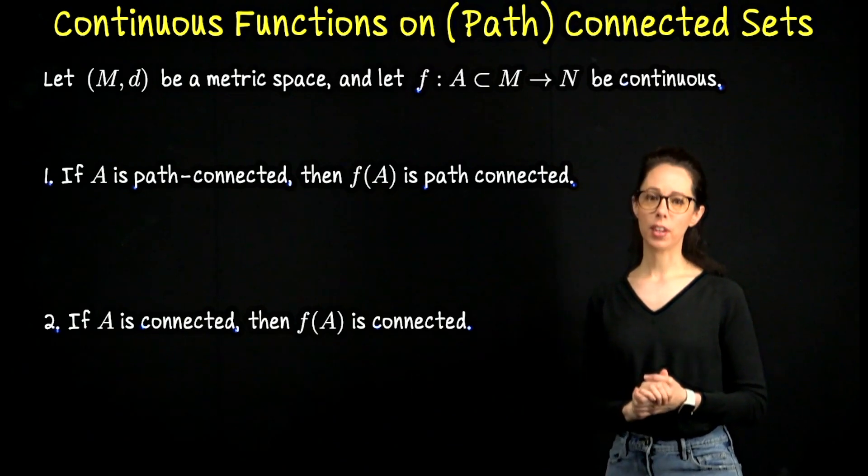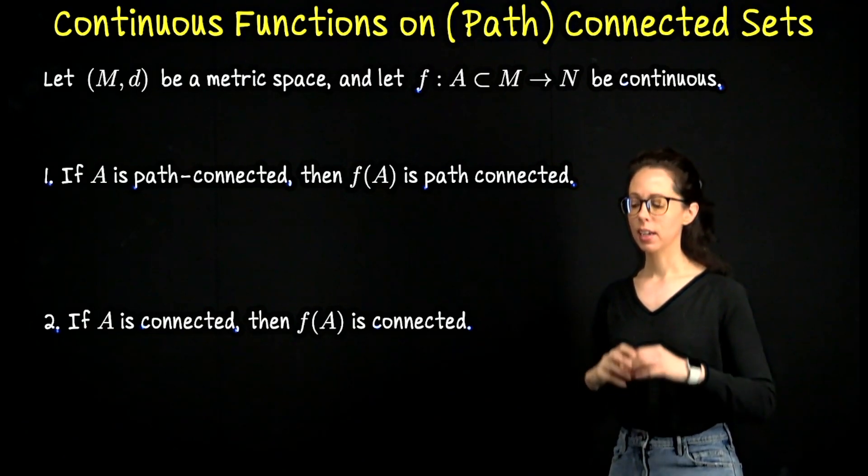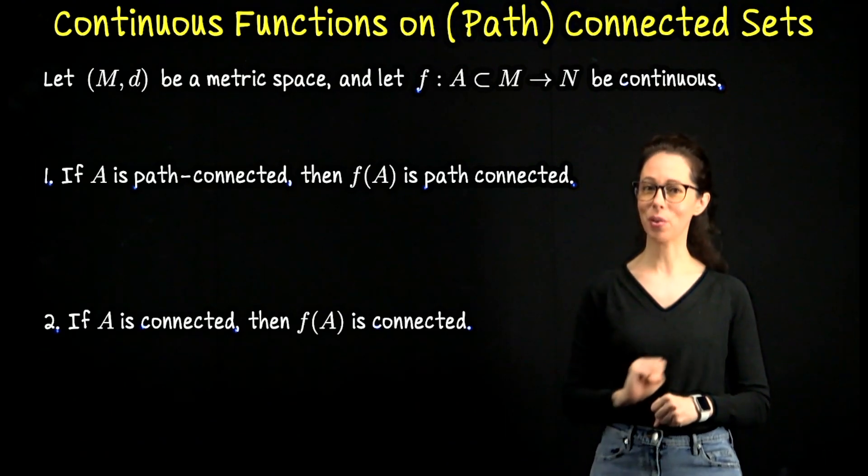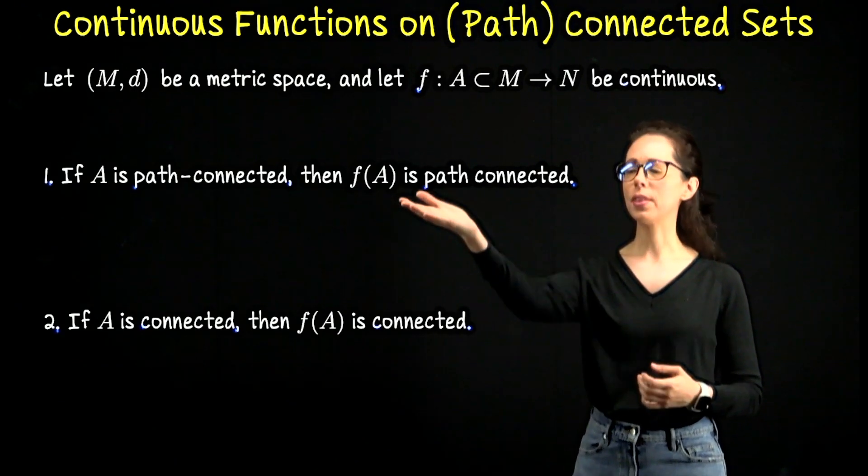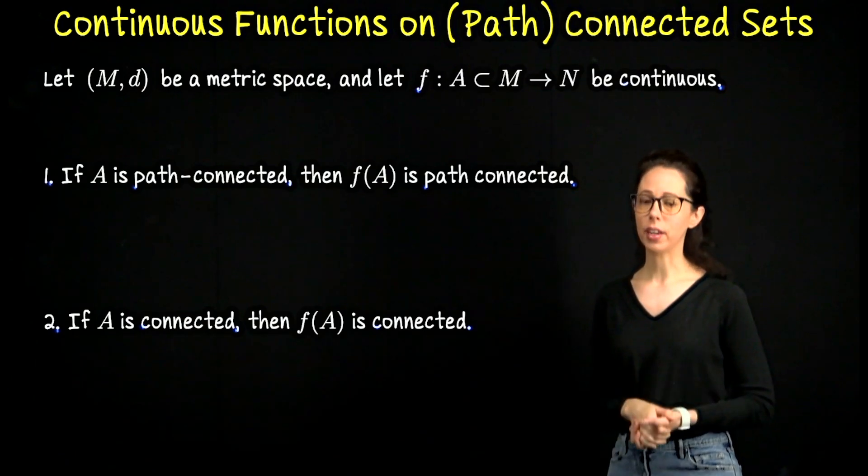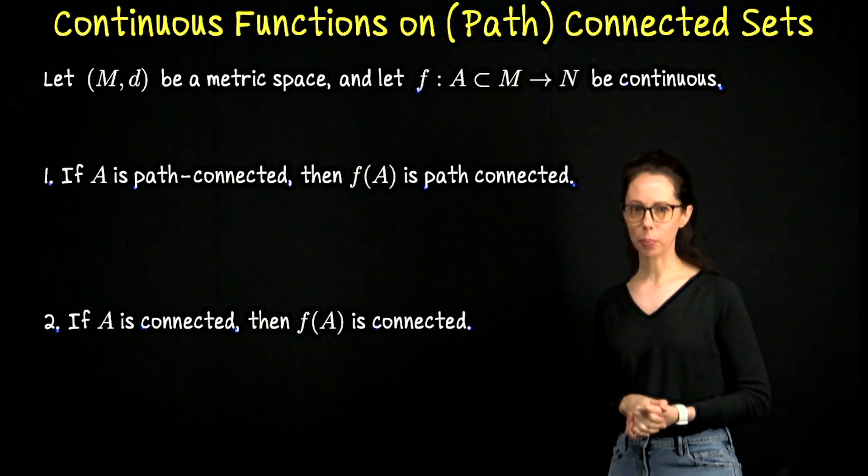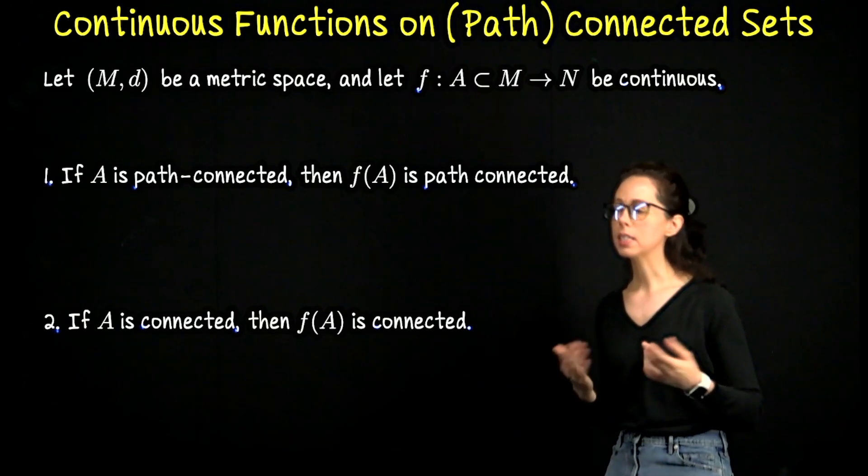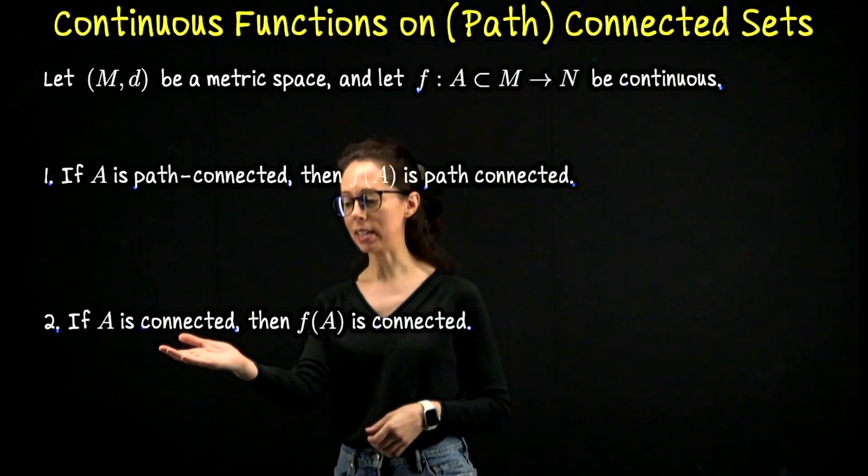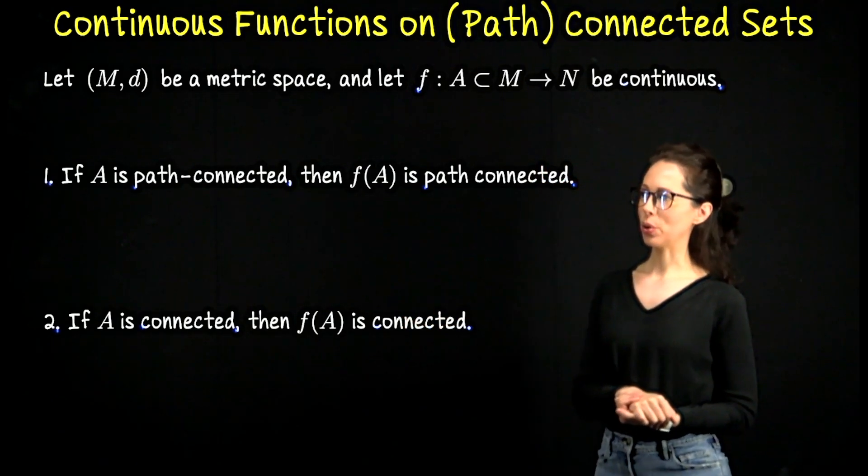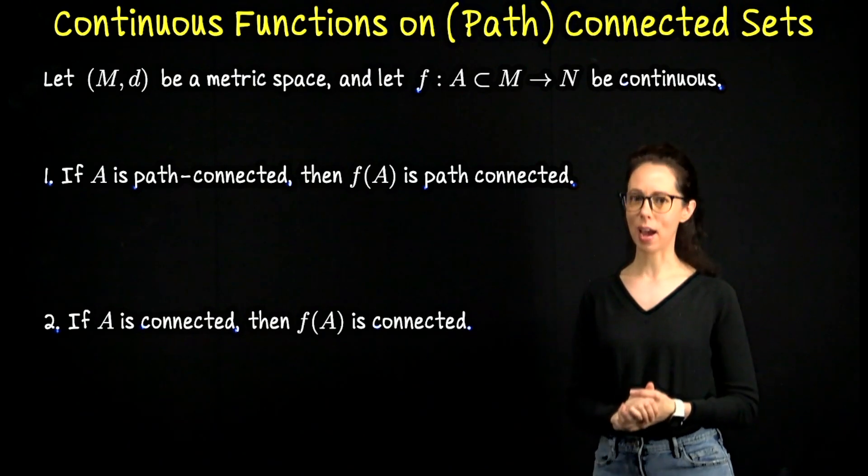If you have seen the video where I prove that a continuous function on a compact set has compact image, in fact I proved it two different ways, the flow of this proof will mirror what we did in that video. And then a related notion which will be proved differently is that if f is continuous and A is connected, then f of A is connected. So that's what we're going to do is prove each of these one at a time.